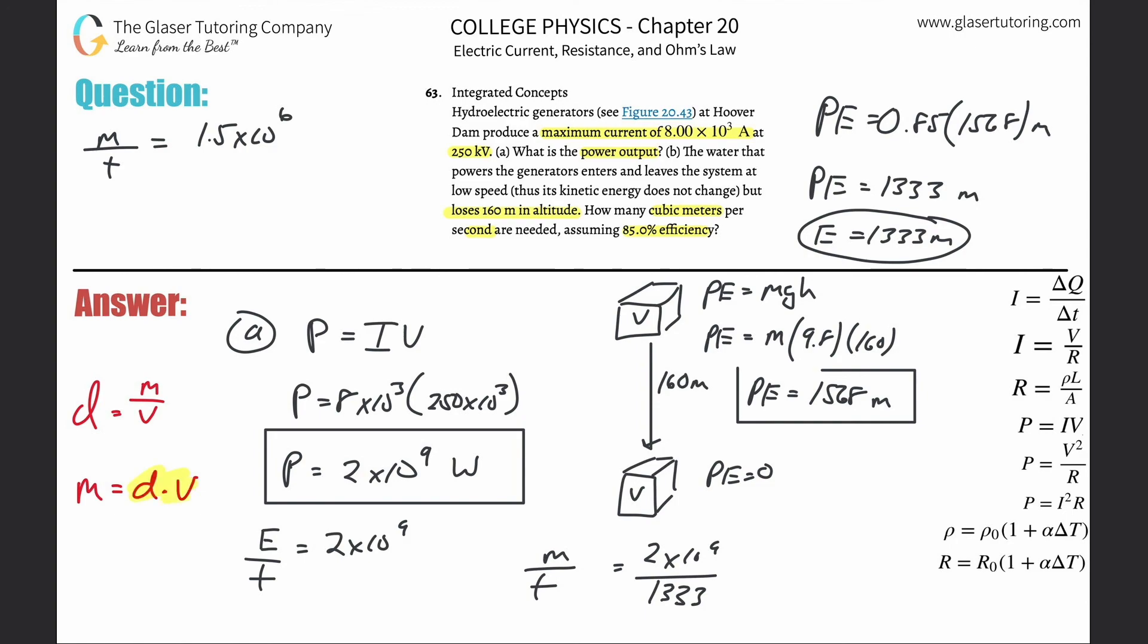Now I got it—that's the formula: volume per time. That's what they wanted: cubic meters per second. All I need to know is the density. The density of water is 1000 kilograms per cubic meter.